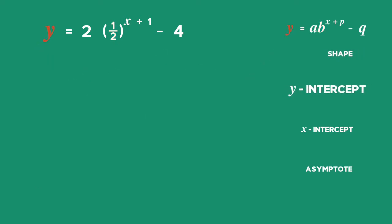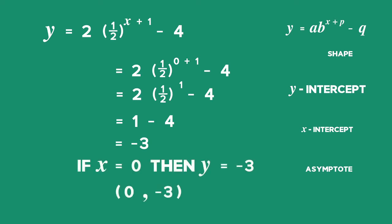Next, we find the y-intercept by making x equal to 0 and solving for y. The y-intercept is the point 0, negative 3.